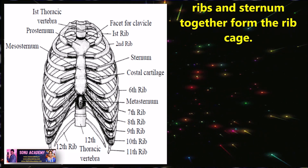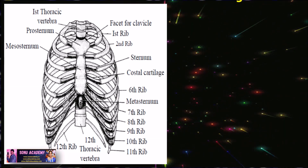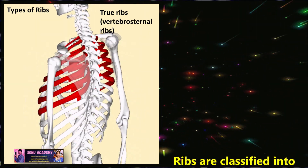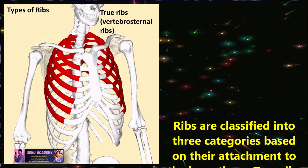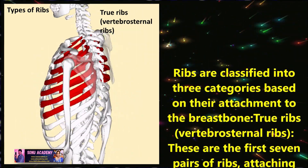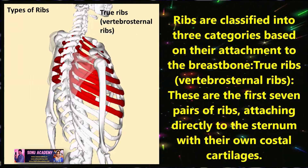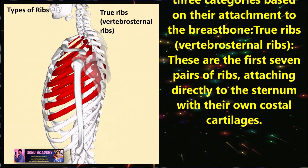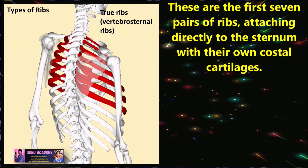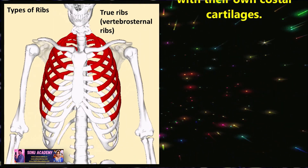Thoracic vertebrae, ribs, and sternum together form the rib cage. Children, ribs are classified into three categories based on their attachment to the breastbone. The first category is true ribs, also called vertebrosternal ribs. These are the first seven pairs of ribs, attaching directly to the sternum with their own costal cartilages.